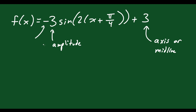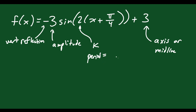The negative represents a vertical reflection, so it's going to flip down. This 2 is your k value, and the k value is what impacts your period. So your period in this case would be equal to 2π divided by k, which is 2π divided by 2, giving us just π. So the period for this one is just π.